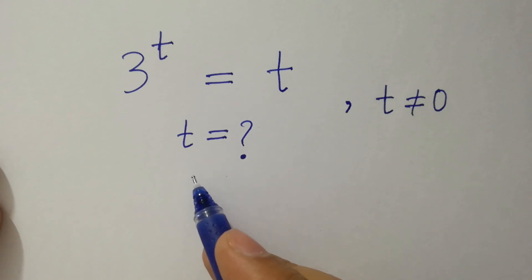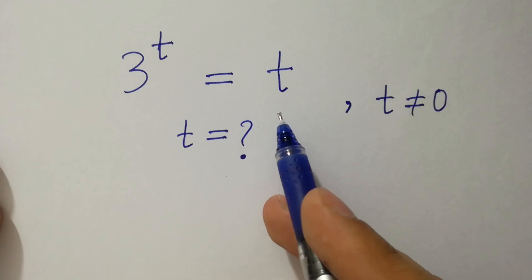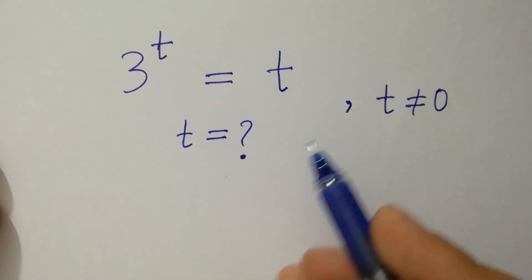Hello friends, find the value of t if 3 to the power t equal to t where t does not equal to 0. Let's have a solution.